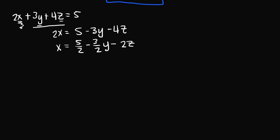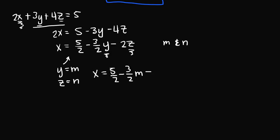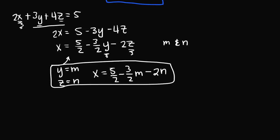This equation also has an infinite solution set because the free variables y and z can take on any real number. To represent this parametrically, we choose parameters m and n — again arbitrary — and let y equal m and z equal n. Plugging these in gives x equals 5/2 minus 3/2 times m minus 2 times n. This is the parametric representation of the solution set, where m and n can each be any real number.